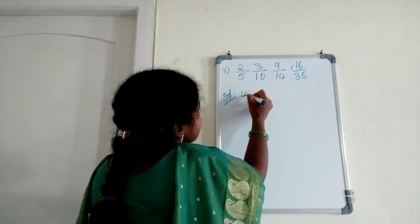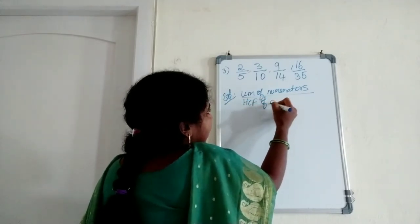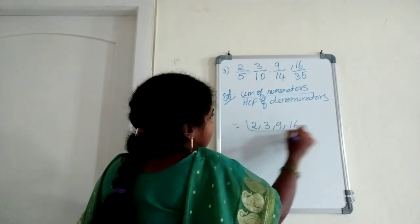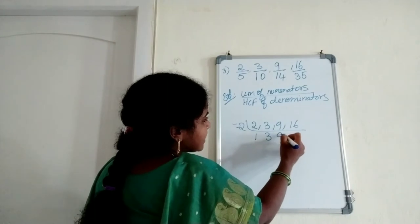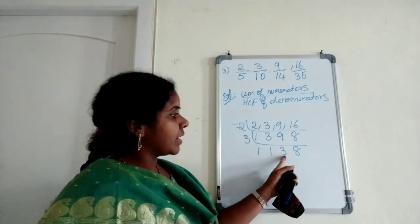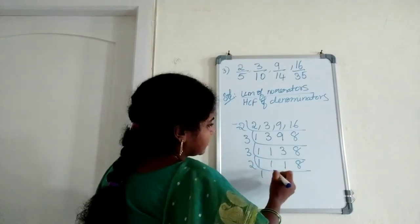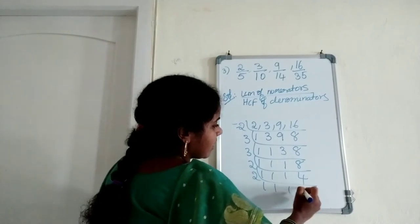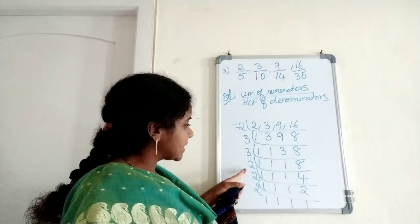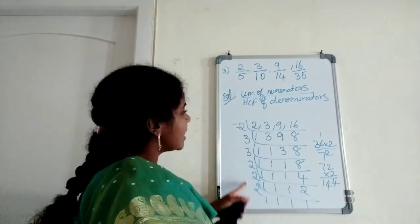One more example. LCM of fractions formula: LCM of numerators divided by HCF of denominators. The numerators are 2, 3, 9, and 16. Using prime factorization: we divide by 2's and 3's. Since 3 and 8 are co-prime, we multiply: 3 × 3 × 2 × 2 × 2 × 2 = 144. LCM of numerators is 144.